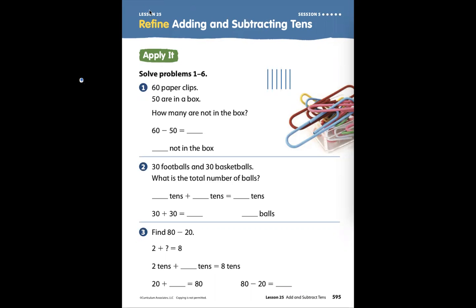60 paperclips. 50 are in a box. How many are not in the box? There are 60 paperclips. 50 of them are in a box. How many are not in the box? 60 has to be the whole or the total amount of paperclips that I have.